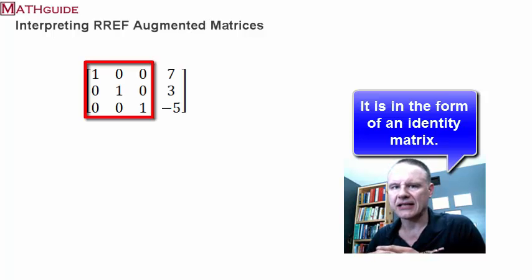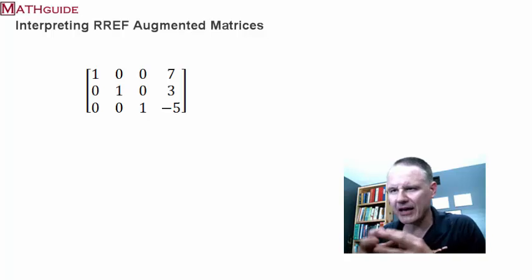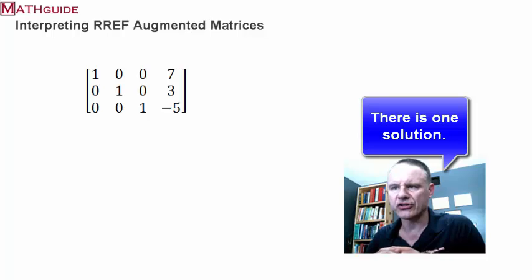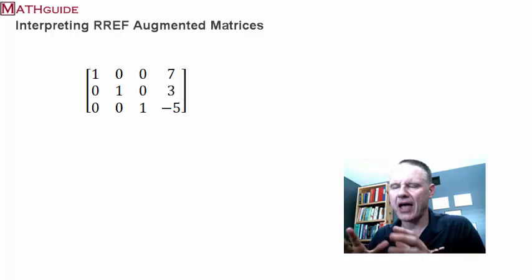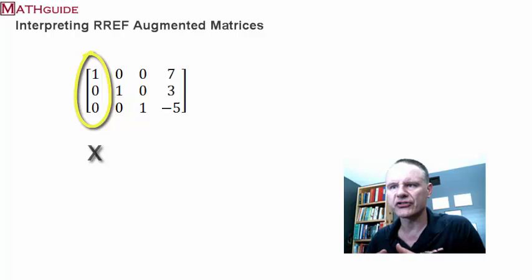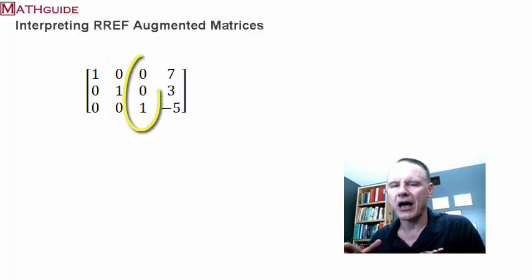Those three columns represent something called the identity matrix, and that's kind of special. If you ever see that after doing reduced row echelon form, you get to that point where you get that identity matrix, it's telling you right now that there's one solution. Keep in mind that in this special form, the first column represents your first variable — let's say it's x. The second column is the second variable, let's say y. And then the third column represents the third variable, which traditionally we would say is z.